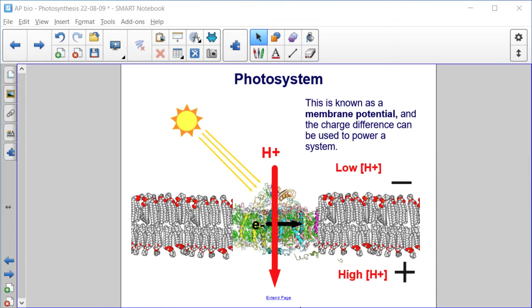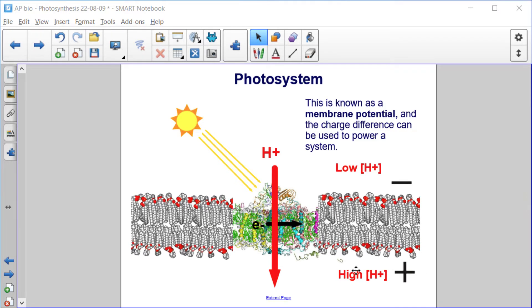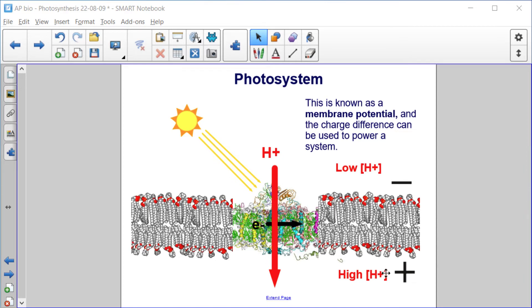This is known as membrane potential, which is something I referenced a few slides back. It's the charge difference between this high proton concentration and low proton concentration. This is what's called an electrical potential, and it can be used to power a system.